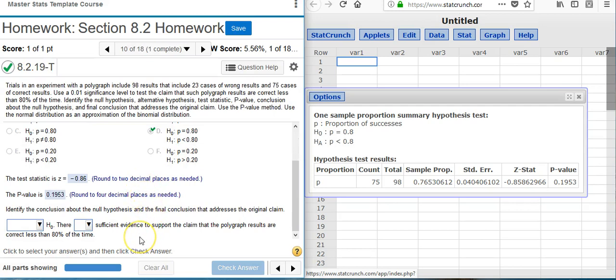And now the last part of our problem asks us to identify the conclusion about the null hypothesis and the final conclusion that addresses the original claim. To do this, we're going to use the p-value method as we were instructed earlier. This means we compare our p-value with our significance level alpha. From our problem statement, we see that alpha equals 1%. Our p-value is almost 20%. And since that is greater than 1%, our p-value is greater than alpha. And that means we are outside the rejection region.